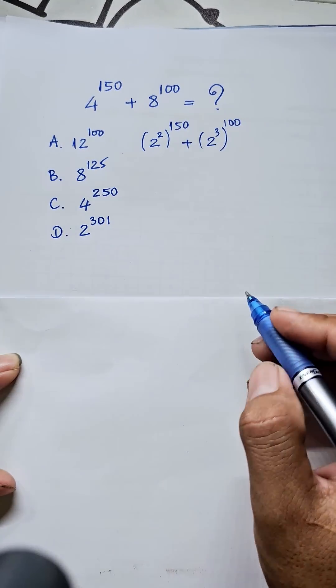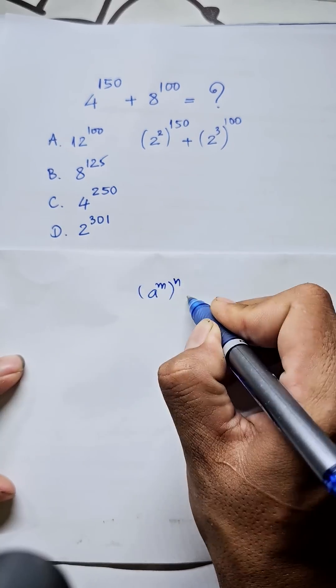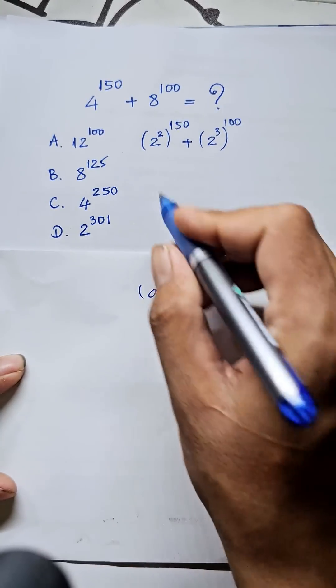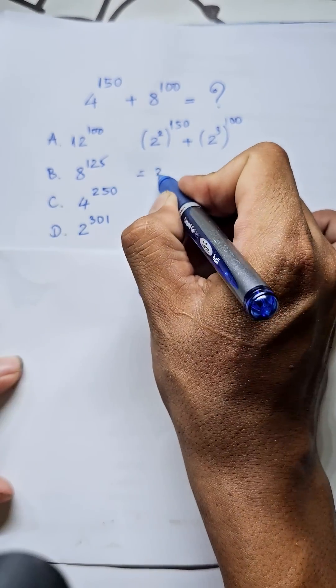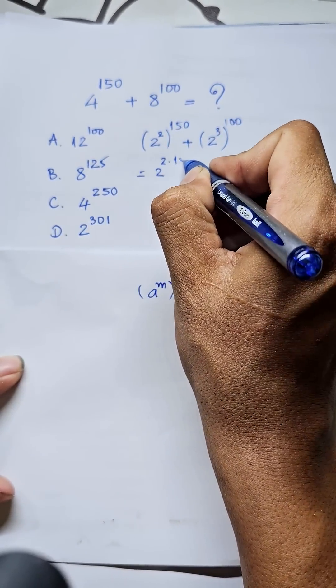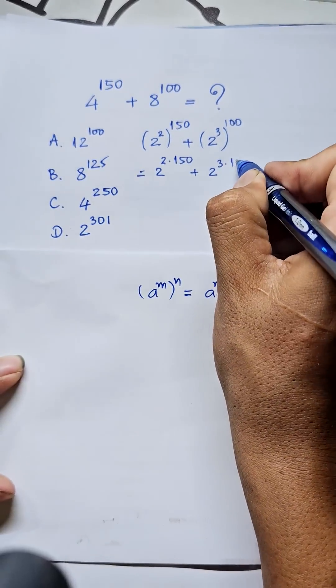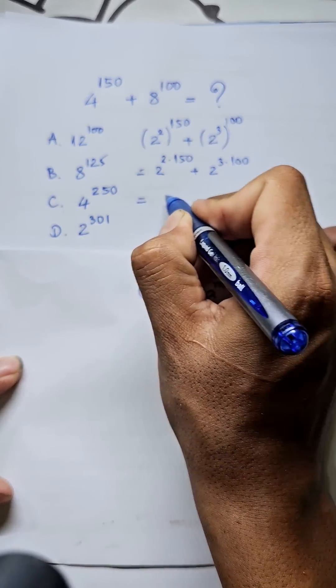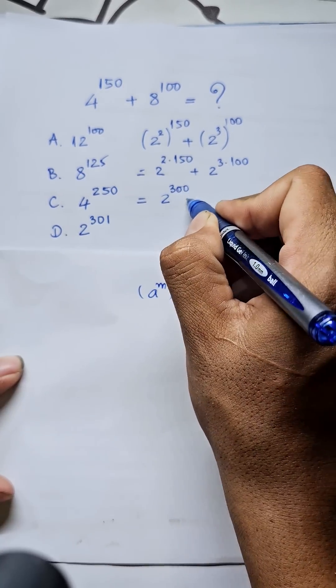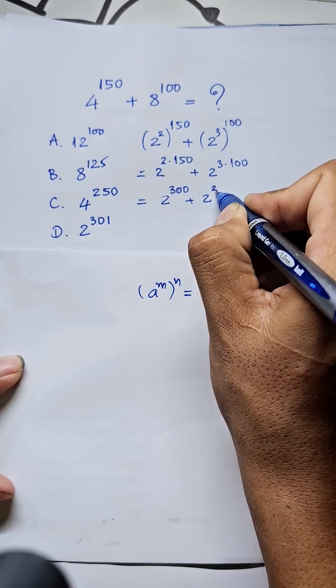We note the formula: if a^m raised to power n, it equals a^(m times n). So this equals 2^300 plus here is 2^300.